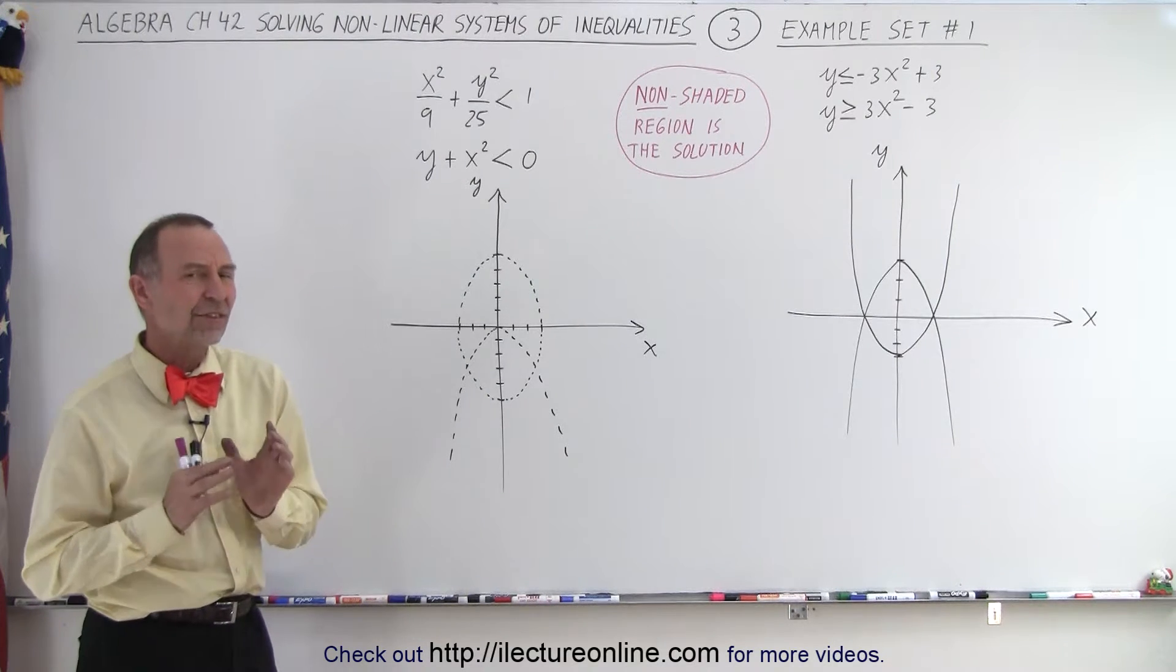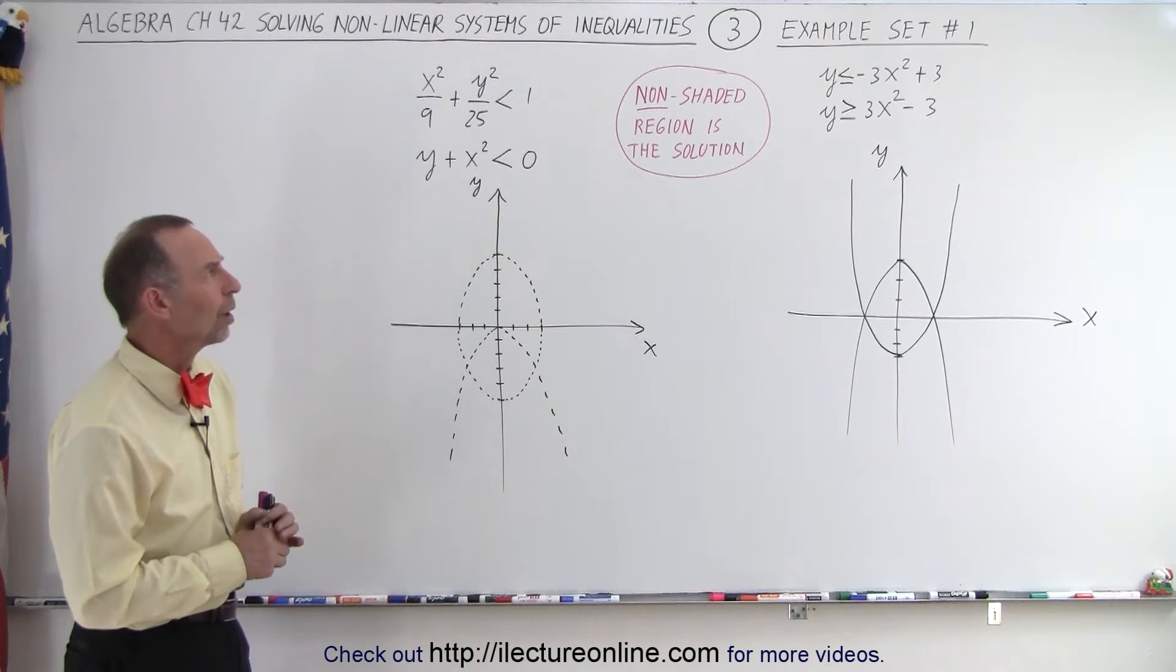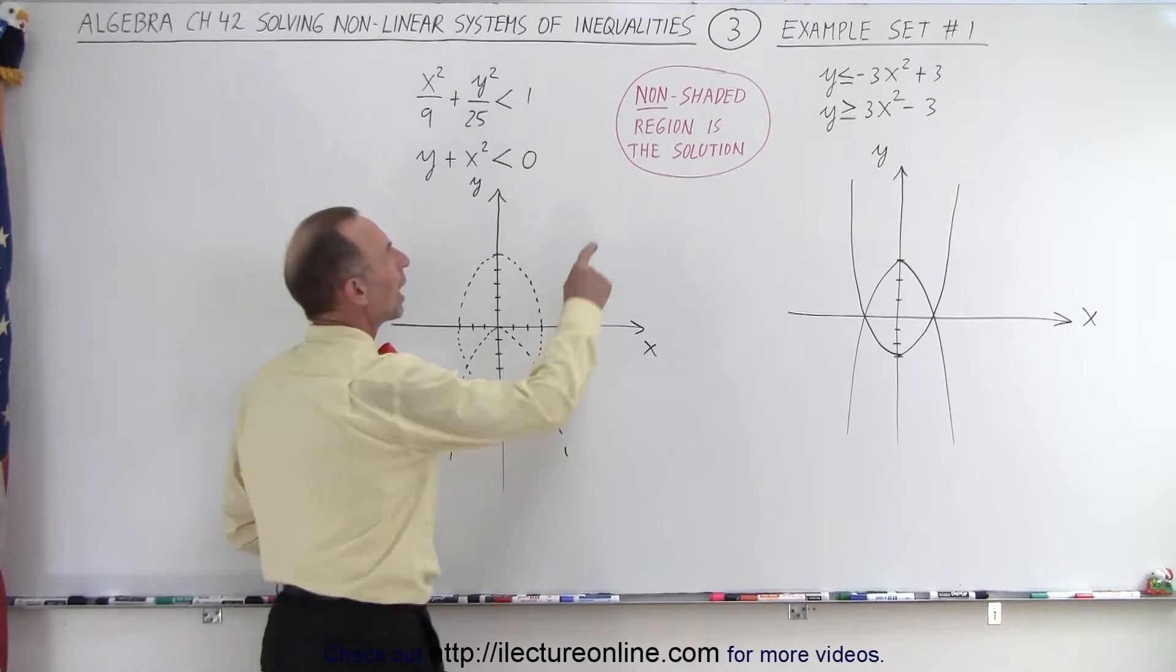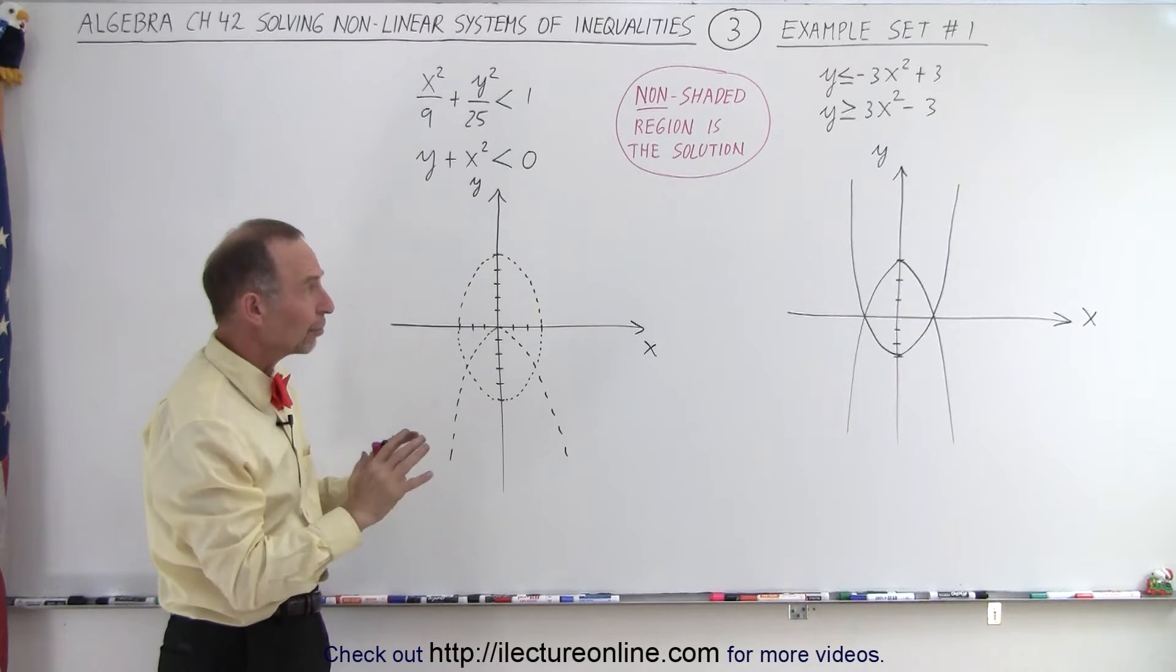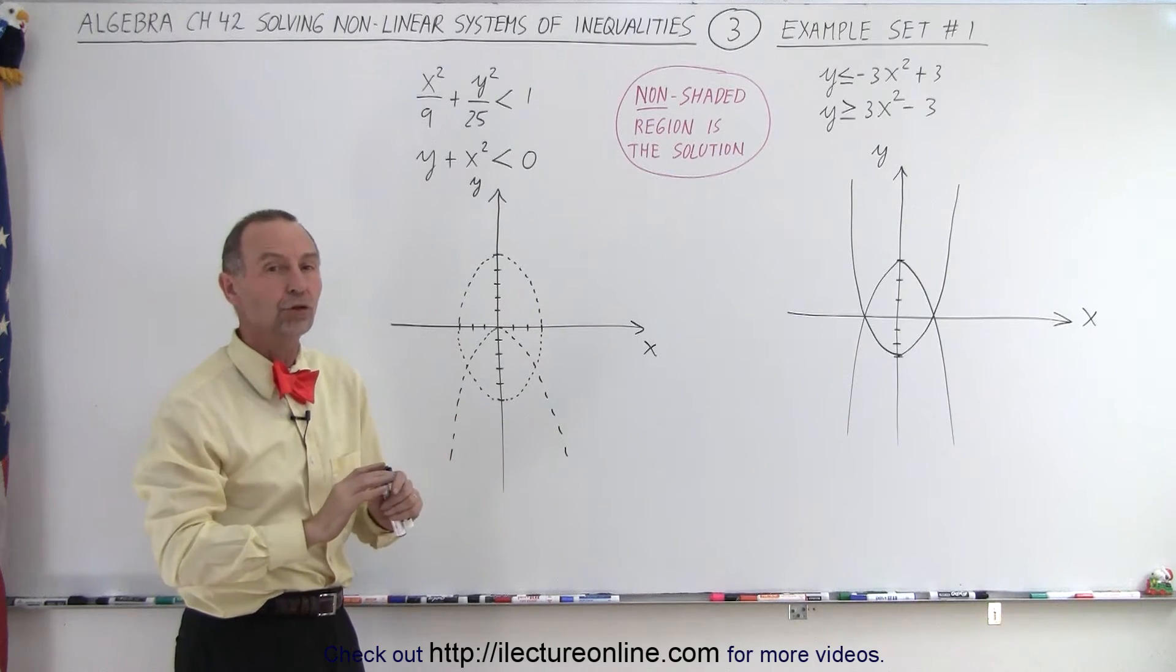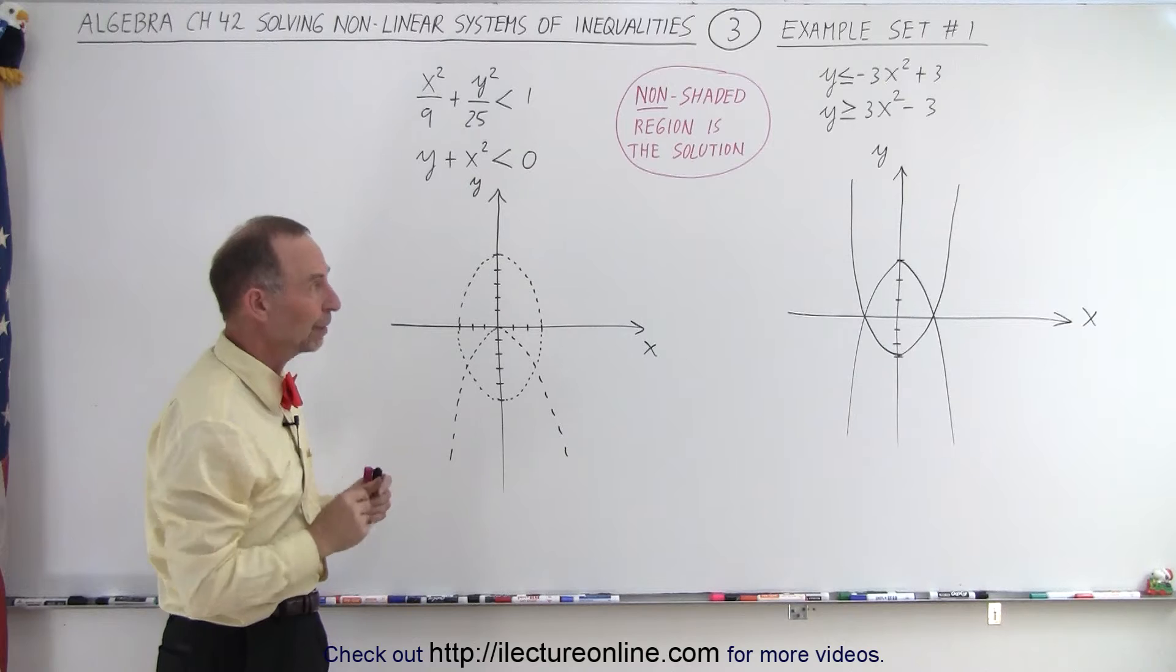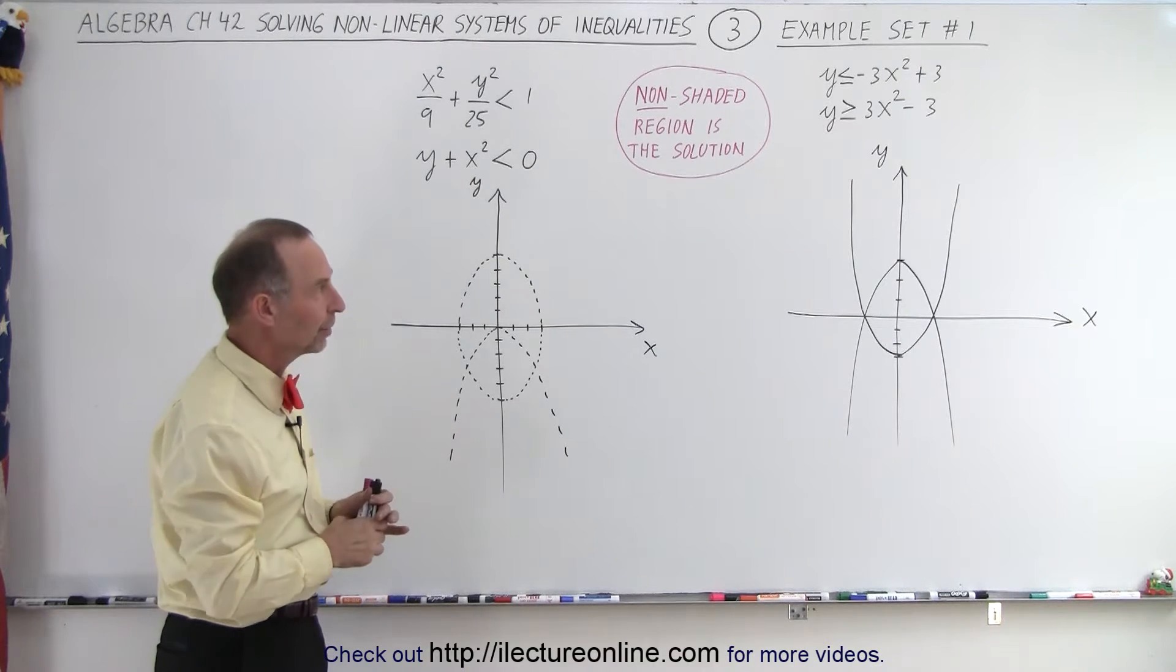And since we're dealing with the system of non-linear inequalities, we're going to call the non-shaded region the solution because we want to keep shading out the portions that are not part of the solution, and whatever is left over is going to be the solution. So we're going to reverse the order here.